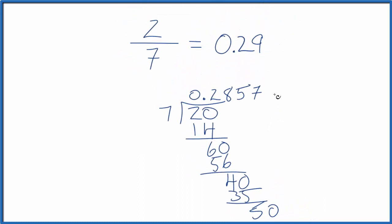So we could round this to 0.29, which is what we found with our calculator. If you multiply this number here, 0.29 times 7, you would get an answer very close to 2.